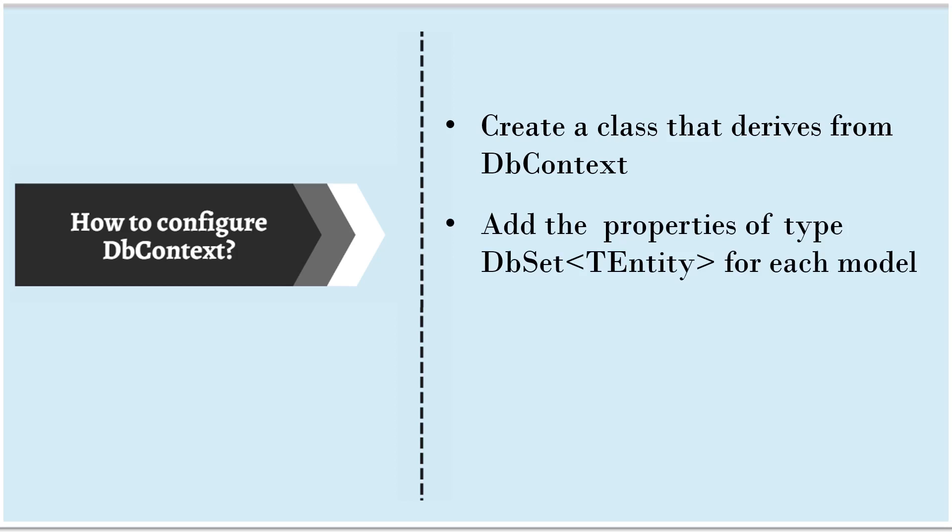Then, to that derived class, we add properties of type DbSet for each model. In our example, we have the Tutorial model, so inside the class that derives from DbContext, we create a property to represent our Tutorial model. Then we pass the configuration information — our context object should know which database server to use, what the name of the database is, and all other necessary information.